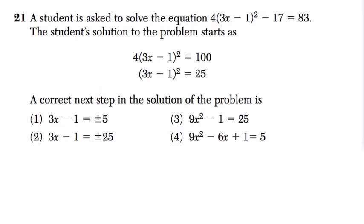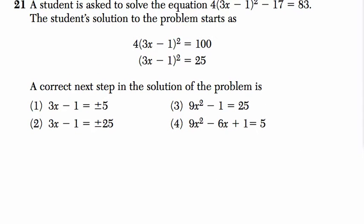Alright, so what I would do is I would say, okay, you've got 4 times 3x minus 1 squared equals 100. And then, what do they do?